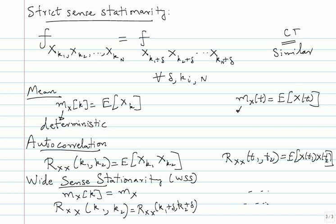What is stronger - strict sense stationary or wide sense stationary? Strict sense stationary should be stronger, but there can be WSS processes that are not SSS, and there can be SSS processes that are not WSS. If you pick a random process where the mean or autocorrelation does not exist, you cannot define WSS. For example, the Cauchy distribution does not have a mean - if you build a process from that, it will be SSS but not WSS. In most cases we deal with random variables that have a mean, so this technicality does not matter.